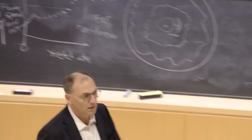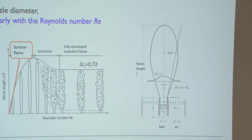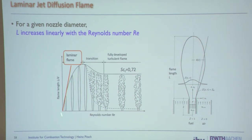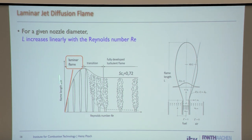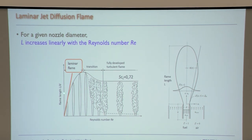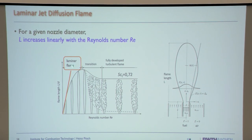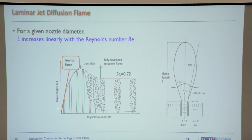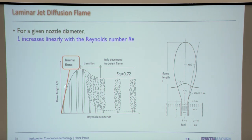Now we want to do the same thing for the turbulent flame. Here are measurements of flame length. In the laminar regime, the solution says flame length as a function of Reynolds number is linear, and that's what the measurements show.